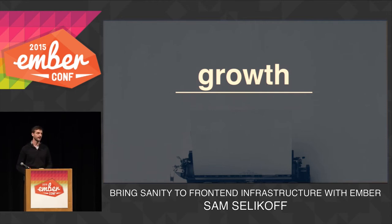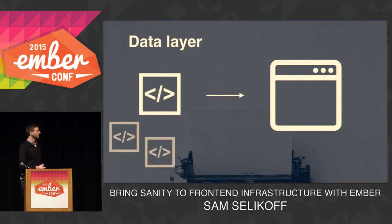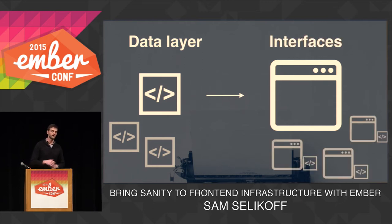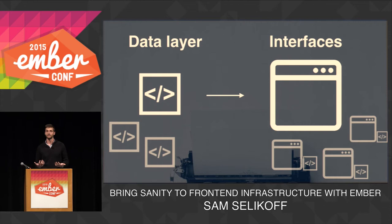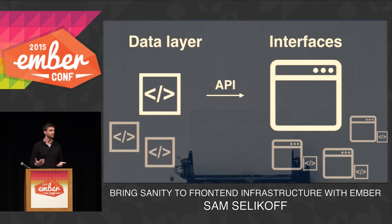They start growing. They hire people in accounting to help with customer service. A single code base doesn't cut it anymore, so they decide to split this code base up into multiple different back-end services and make a data layer out of this. At the same time, they split up their front-end interfaces into multiple products — still the main client-facing web product, but also additional client-facing and internal web products.